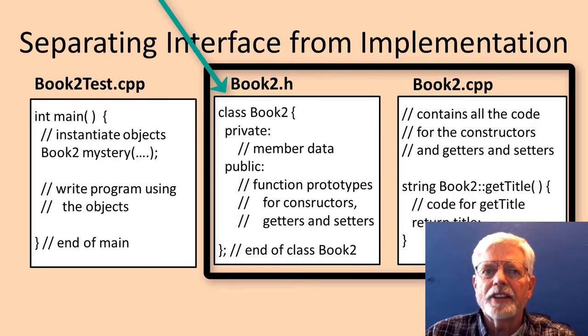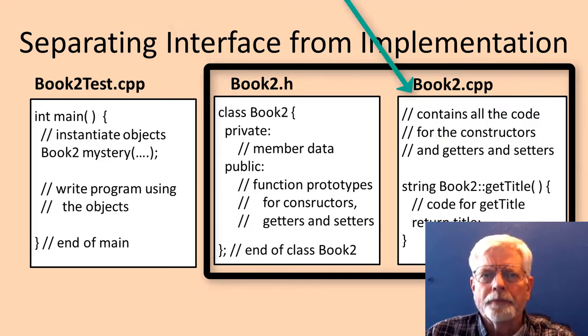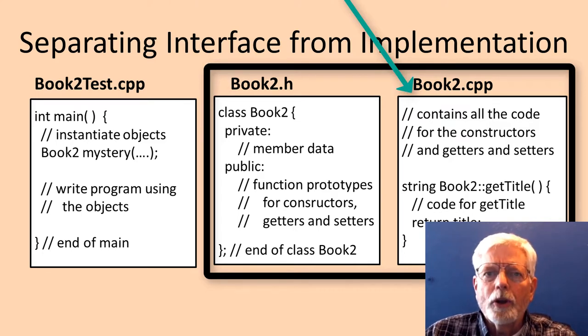The header file, Book2.h, contains the class definition with the member data, but only contains function prototypes for the member function methods, but no code. The executable code for class Book2 is placed in a separate file named Book2.cpp.